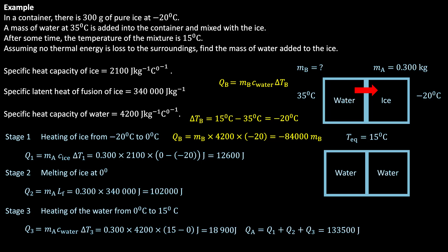The last step is to use conservation of energy. The system of ice and water forms a closed, isolated system, so the net thermal energy gained by the system is zero. We can write QA plus QB equals 0. Substituting: 133,500 plus minus 84,000 MB equals 0. Solving for MB, we get MB equals 1.589 kilograms, which is equal to 1.6 kilograms to the appropriate significant figures.